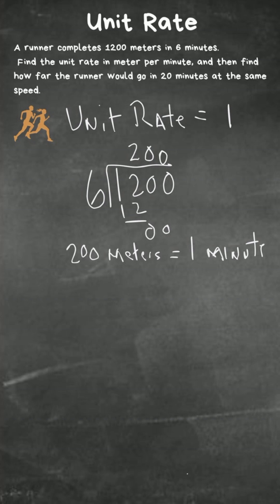find how far this particular runner is going to go in 20 minutes, you just multiply 20 minutes times the unit rate, which is 200 meters. So this particular runner is going to go 4000 meters